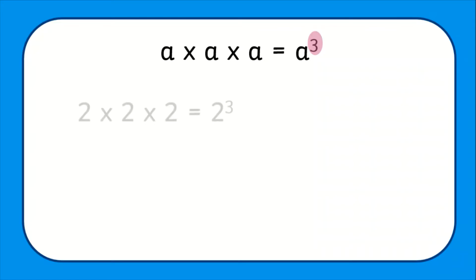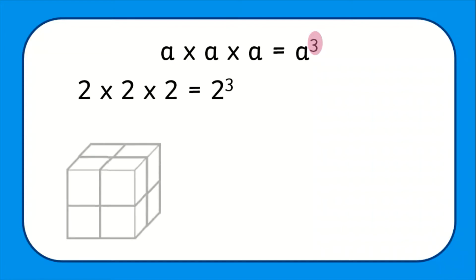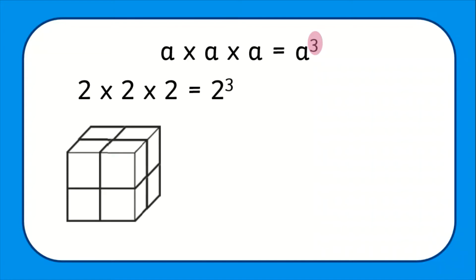Cube numbers can be illustrated as, you guessed it, a cube. For example, let's find the value of 2 cubed. 2 cubed is the same as 2 multiplied by itself and then multiplied by itself again. We cannot show this with an array, but we can show it using a cube, which has a width of 2, a height of 2 and a depth of 2.